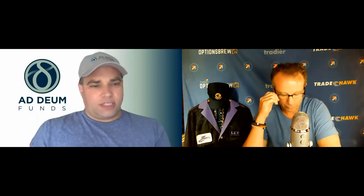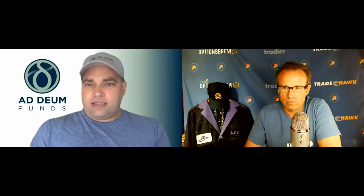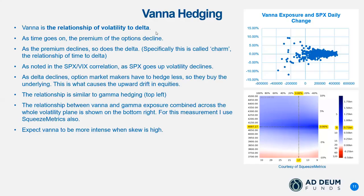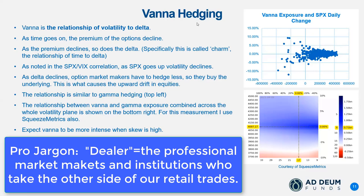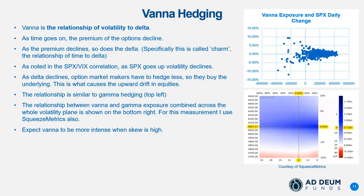Jason shares his screen to begin the third part of the series exploring the impact of dealer positioning on the market. As a quick review: variance risk premium is the premium built into option pricing that pays for convexity. When you buy a call as a retail trader, you have fixed risk but infinite possible return — that's a gamma dynamic.